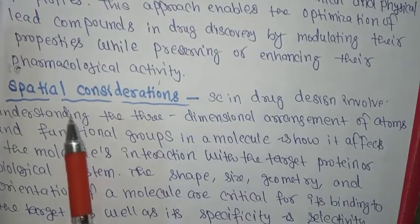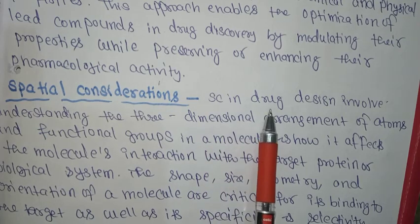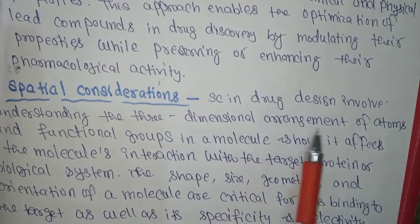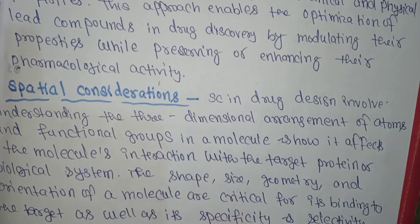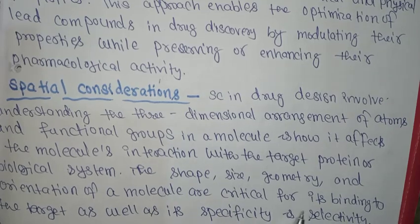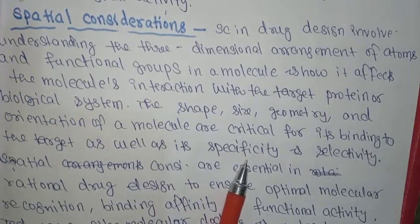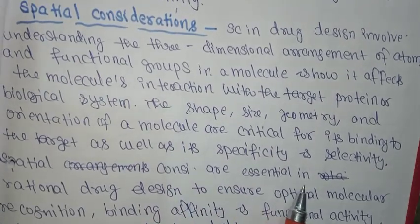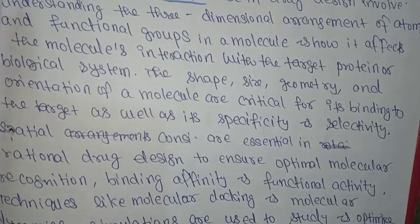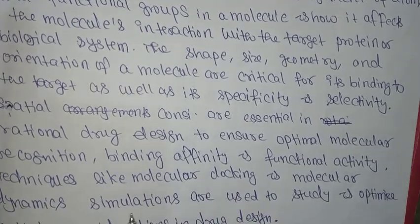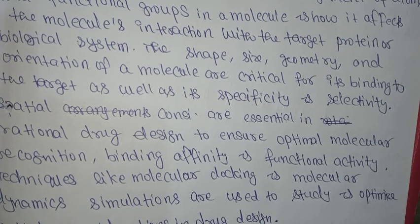The last topic is spatial consideration. Spatial consideration in drug design involves understanding the three-dimensional arrangement of atoms and functional groups in the molecule and how it affects the biological system. The shape, size, geometry, and orientation of a molecule are critical for its binding to the target, as well as its specificity and selectivity. Spatial considerations are essential in rational drug design to ensure optimal molecular recognition, binding affinity, and functional activity. Techniques like molecular docking and molecular dynamics simulations are used to study and optimize spatial considerations in drug design.